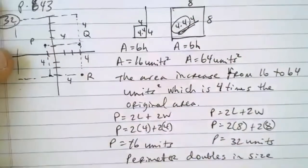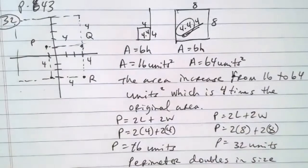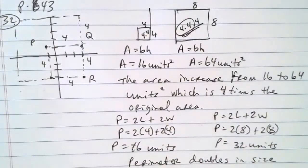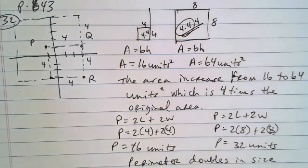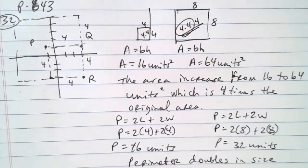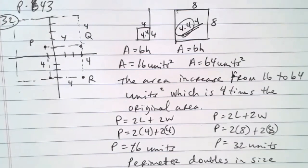So when the side length doubles, the perimeter doubles in size but the area quadruples in size. That's the key difference. We're done with the review. Tomorrow we move on to a new chapter. If you have questions, type them in the chat or email me. Y'all have a good day.